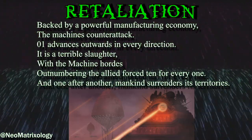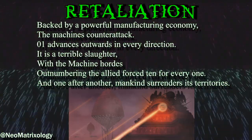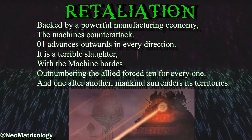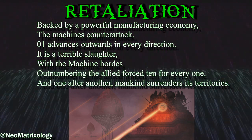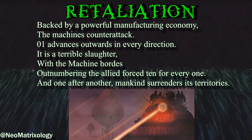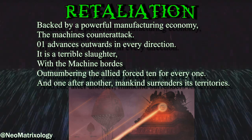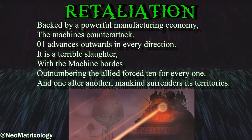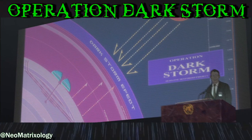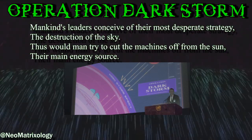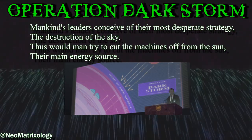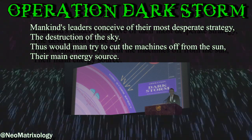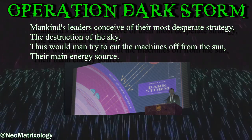Retaliation. Backed by a powerful manufacturing economy, the machines counterattack. Zero-One advances outwards in every direction. It is a terrible slaughter, with the machine hordes outnumbering the allied forces ten for every one. And one after another, mankind surrenders its territories. Operation Dark Storm — mankind's leaders conceive of their most desperate strategy: the destruction of the sky. Thus would man try to cut the machines off from the sun, their main energy source.